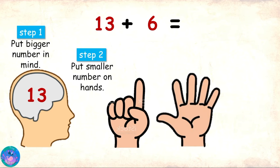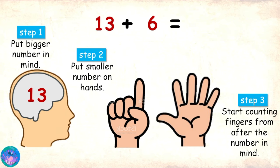Then, start counting from after 13. So, 14, 15, 16, 17, 18, and 19. So, 13 plus 6 is 19.